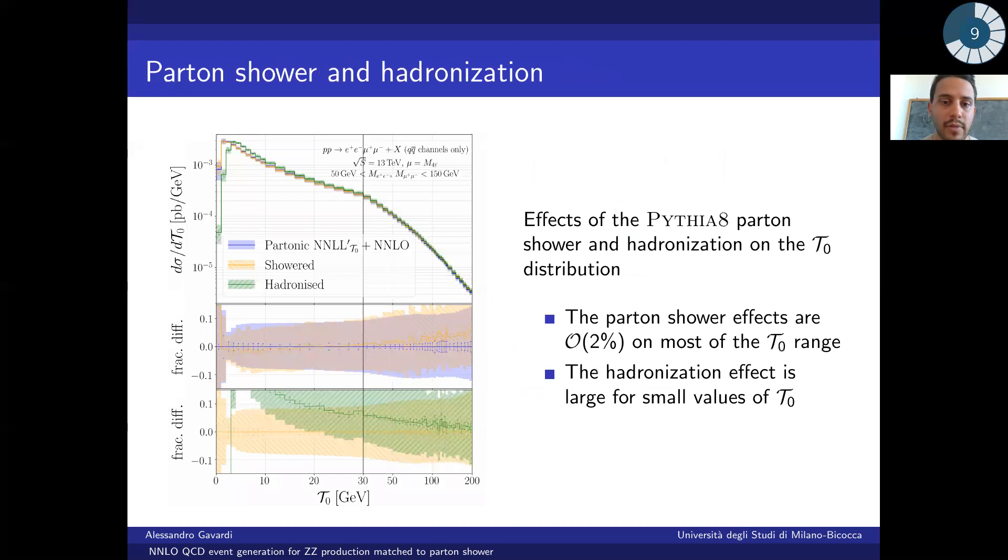Let's now come to the final results. In this plot here, we can see the distribution of tau0 before and after the parton shower and the hadronization provided by Pythia8. The blue curve is the partonic distribution given by Geneva, and we know that it is NLO plus NNLL prime accurate.